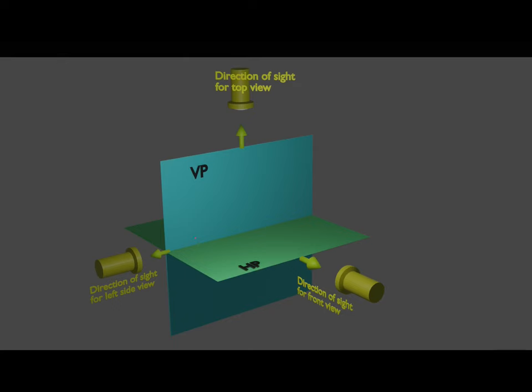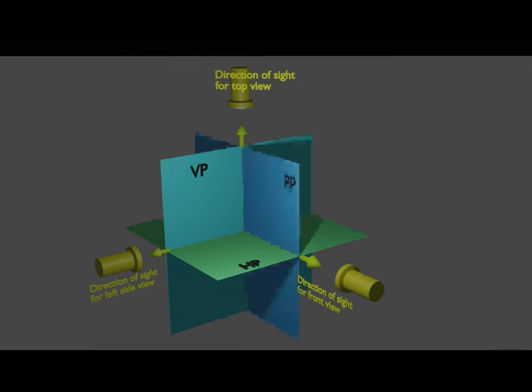The vertical plane and horizontal plane divide the space into four quadrants. Starting with the first, which is above the horizontal plane and in front of the vertical plane. The second quadrant is behind the vertical plane and above the horizontal plane. The third quadrant is below the horizontal plane and in front of the vertical plane. In addition to these principal planes, there is one more reference plane that is mutually perpendicular to these two, and that is called the profile plane.